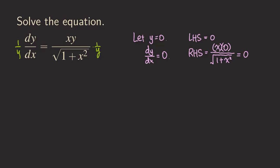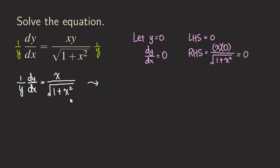We are going to multiply by 1 over y. What happens is that we get 1 over y times dy over dx equal to — the y's cancel — and we just get an expression involving x: x over the square root of 1 plus x squared. Now we can multiply both sides by dx, treating dx as the differential. So we get 1 over y dy equals x over the square root of 1 plus x squared dx. We have an expression involving y only on the left, and an expression involving x only on the right.